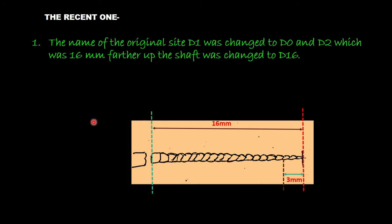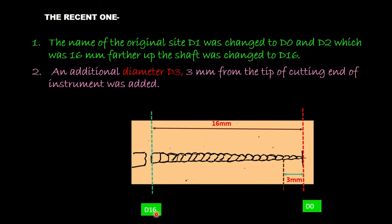The changes that have been proposed: the tip diameter that previously we used to call D1 was changed to D0. And 16 mm from this D0, we used to have D2 but now we call it D16. And 3 mm from D0, we have D3. So an additional diameter D3, 3 mm from the tip of the cutting end of the instrument, was added.